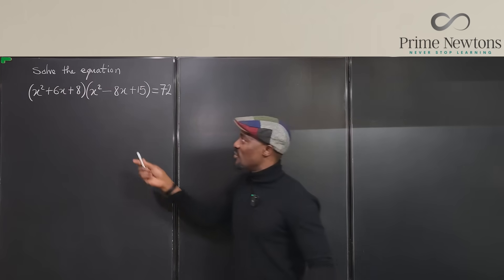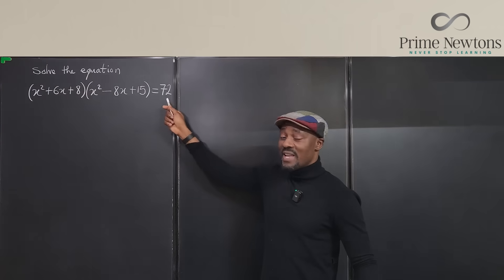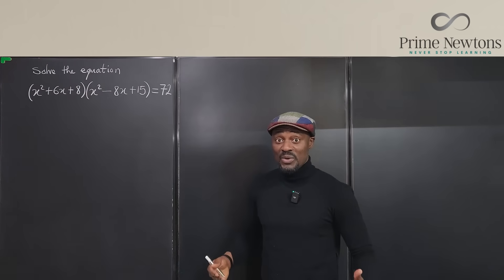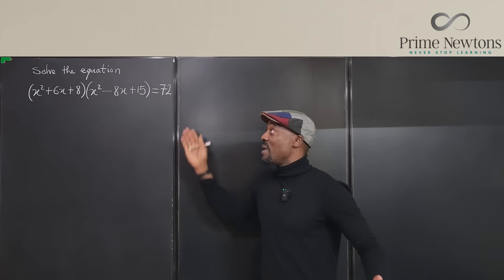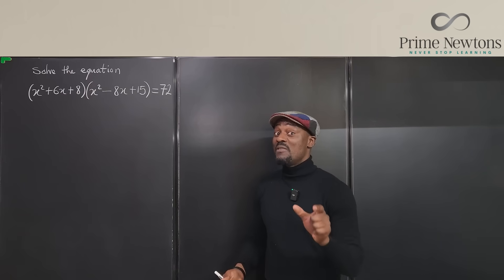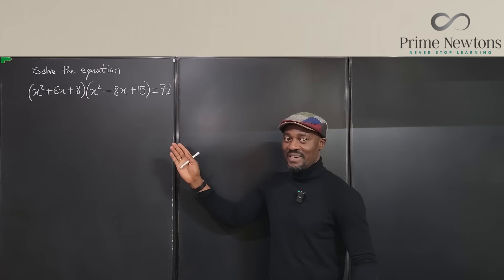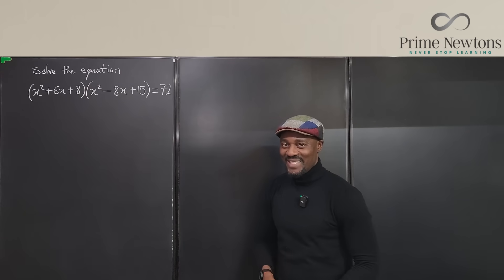But somehow we have some nice looking quadratics, but on the right hand side there is a number that is not zero and that makes solving this using the zero products property impossible. But there is a very nice trick when it applies that makes your life super easy. Let's get into the video.